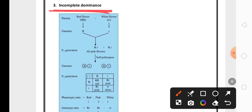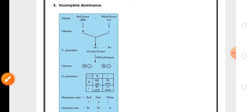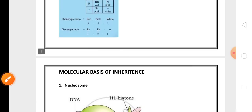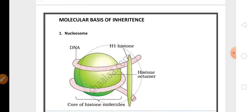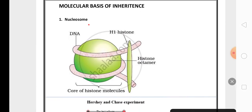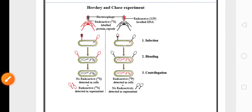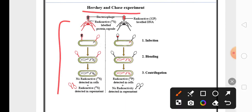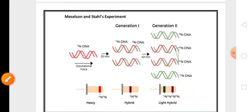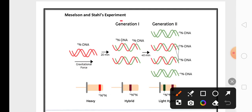Then from molecular basis of inheritance, nucleosome diagram is very very important along with the explanation. Then for three marks, Hershey-Chase experiment is important to prove DNA is a genetic material. Another experiment to prove the DNA replication is semi-conservative is Meselson-Stahl experiment. This also important for five marks.